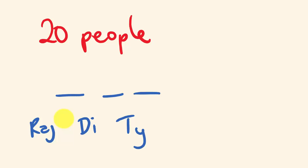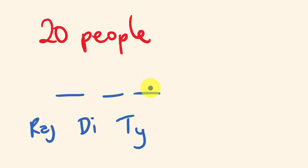If I was talking about permutations, where I placed Raj, Dai, and Tai would actually matter. It would be considered different that Raj sits here, Dai sits here, Tai sits here — as opposed to Dai sitting here, Raj sitting here, Tai sitting here, or Tai sitting here, Dai there, and Raj there. They would be considered different arrangements.